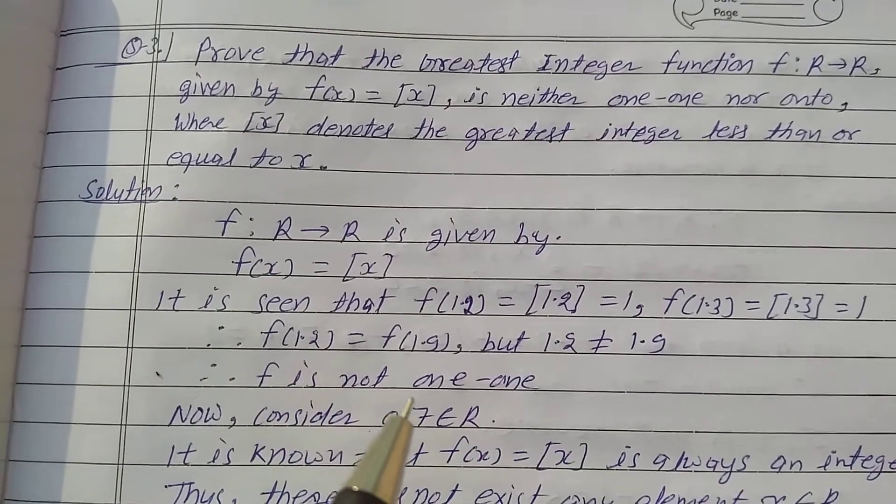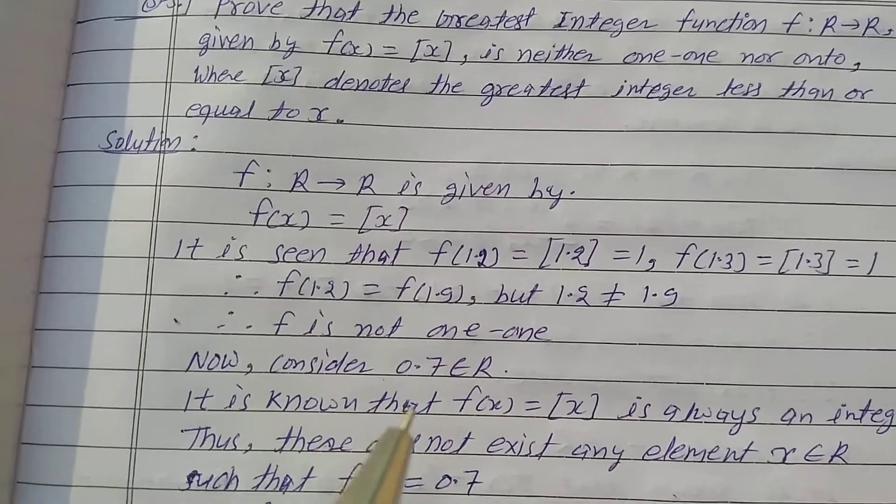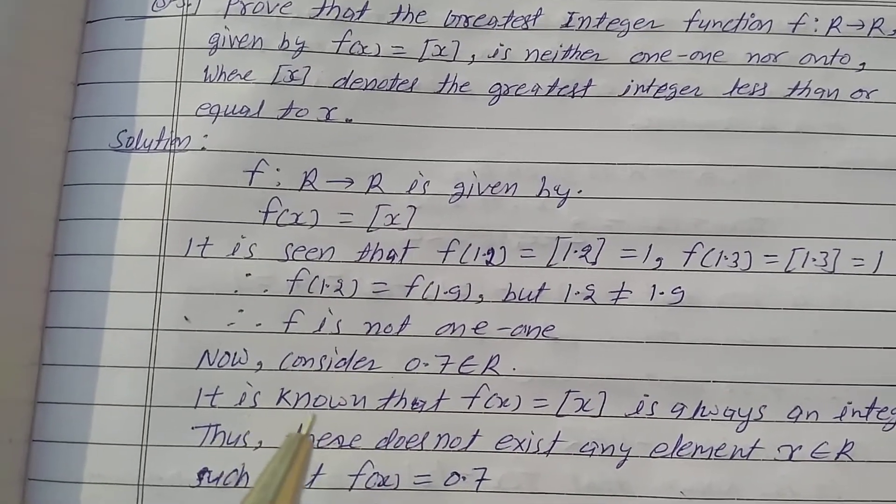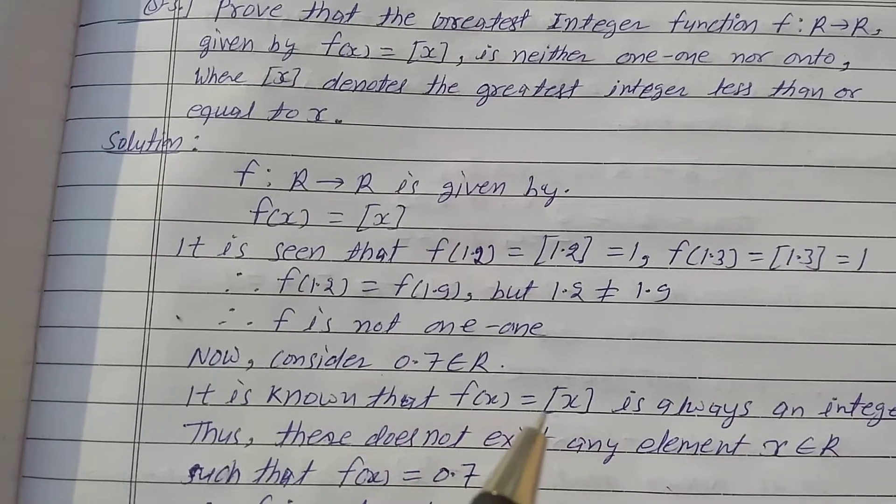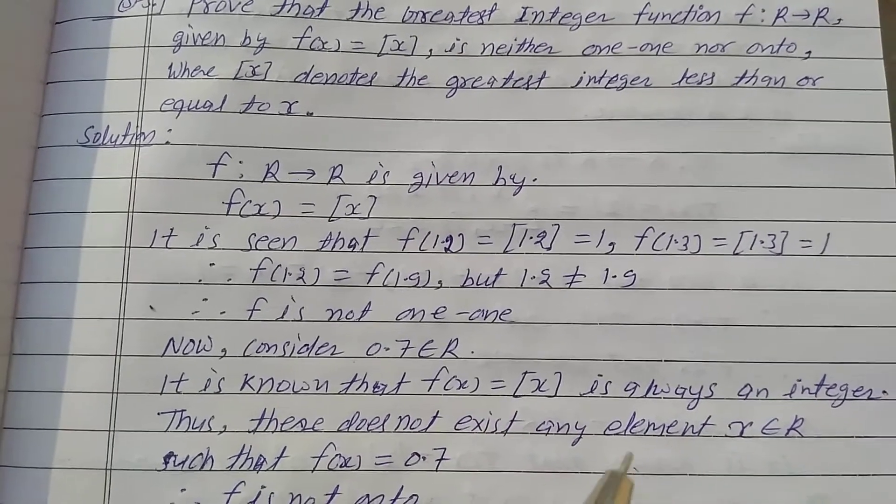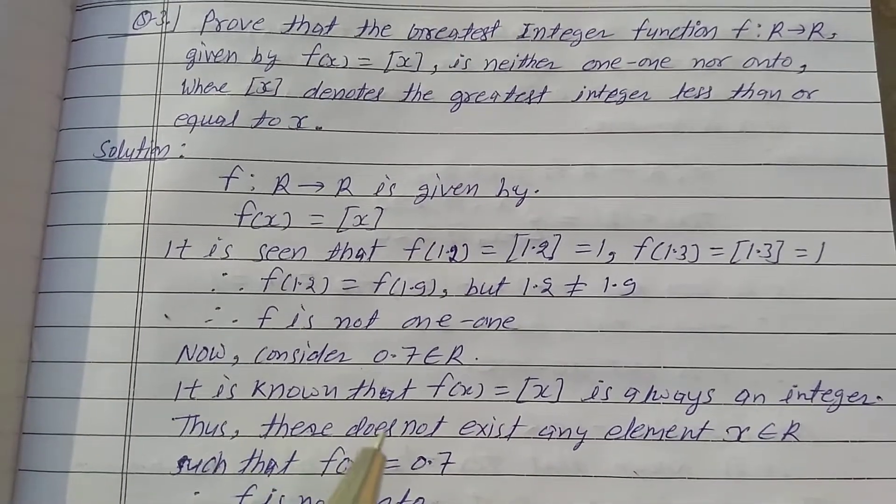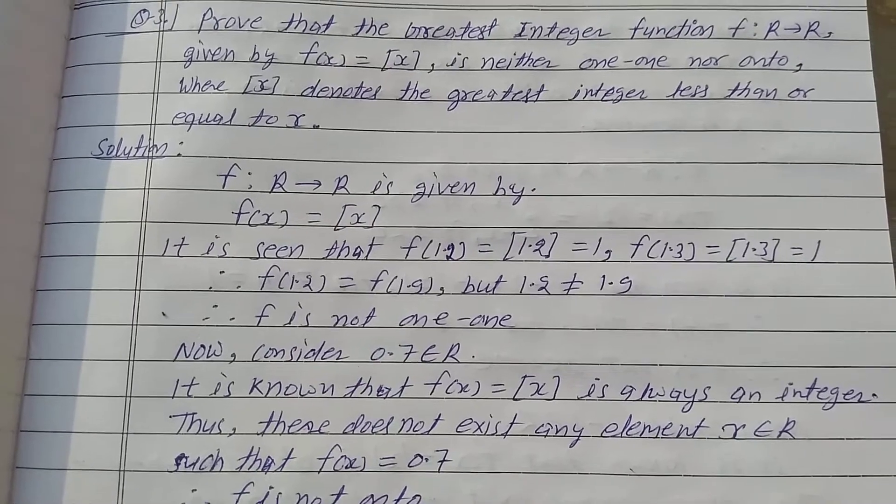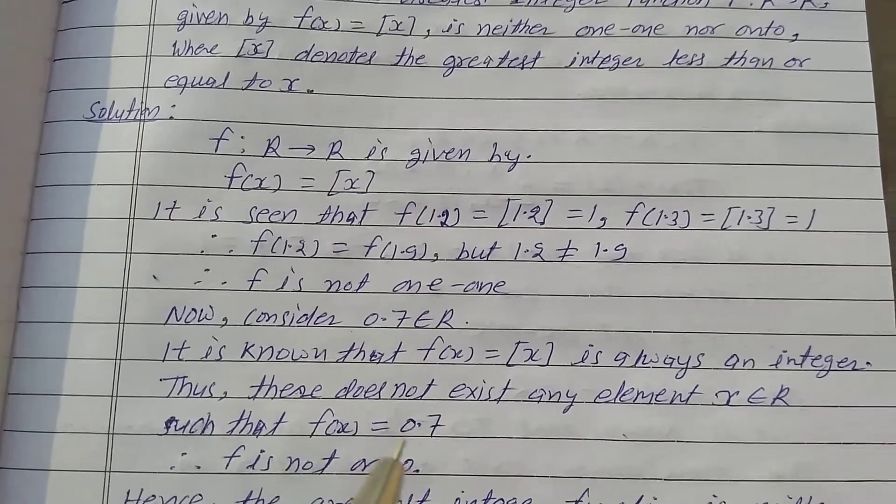Therefore f is not one-one. Now consider 0.7 ∈ R. It is known that f(x) = [x] is always an integer. Thus there does not exist any element x ∈ R such that f(x) = 0.7.